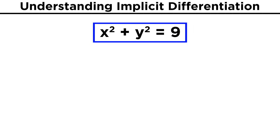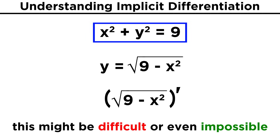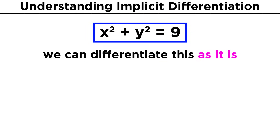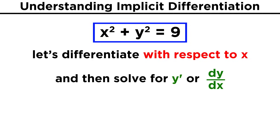With the example we were just discussing, we know that we could solve for y in terms of x, and then take the derivative as we already know how. But this can be difficult and time consuming, and sometimes it's not even possible. Implicit differentiation will allow us to take the derivative of this function without having to solve for one variable in terms of another. Instead, we can just leave everything as it is, and simply differentiate with respect to one specific variable. We typically differentiate with respect to x, so let's do that to this function, and then we can solve for y prime, or the derivative of y with respect to x, which is what we are looking for.